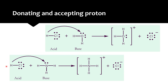Looking at another example: HCl reacts with ammonia (NH3). The products are ammonium ion (NH4+) and chloride ion. HCl donates its proton to ammonia, so HCl is an acid. Ammonia accepts the proton, so it is a base by this definition. This shows that there can be no water involved in an acid-base reaction according to Bronsted-Lowry.